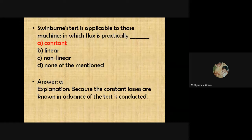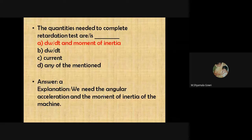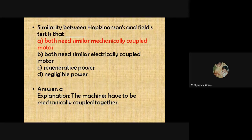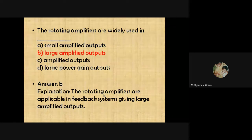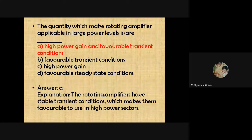The Swinburne test is applicable to machines in which flux is practically constant. The quantities needed to complete the retardation test are dω/dt and moment of inertia. The similarity between the Hopkinson test and the field test is that both require similar mechanically coupled machines. Rotating amplifiers are widely used in feedback systems giving large amplified outputs, and the quantity that makes them applicable at large power levels is high power gain.